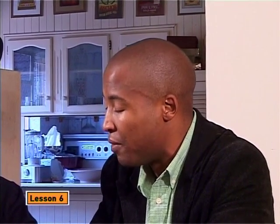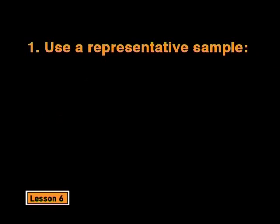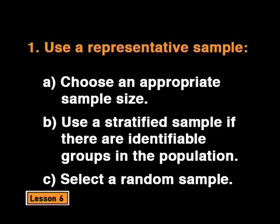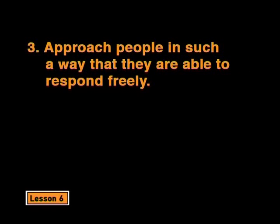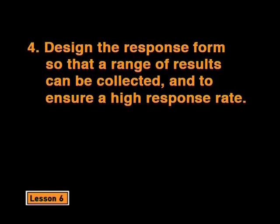What we've learned in this lesson is the importance of designing a survey carefully to eliminate the effects of bias. Let's sum up the rules for designing a survey. First, use a representative sample: choose an appropriate sample size, use a stratified sample if there are identifiable groups in the population, and select the sample randomly. Second, the survey question should avoid bias by not suggesting a preferred answer. Third, approach people in such a way that they are able to respond freely — the questionnaire may be anonymous if necessary. Fourth, design the response form so that a range of results can be collected and to ensure a high response rate.